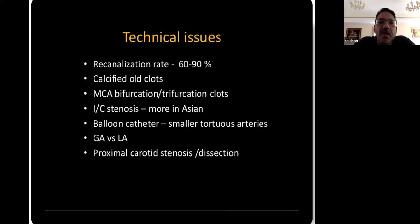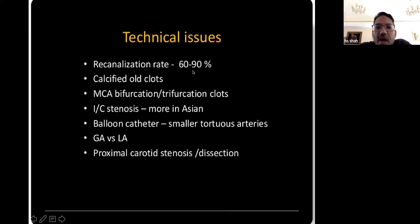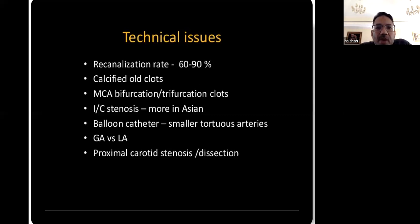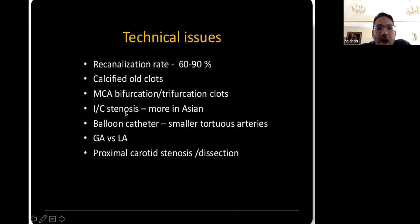Some technical issues: sometimes you can achieve high recanalization rates of 60 to 90%, but if there are calcified or old clots, they're difficult to get out. Calcified pieces from the heart are also difficult to treat. Bifurcation clots going into different vessels are difficult to treat. Some patients have intracranial stenosis — Pakistani and Indian patients among other Asians have higher rates of intracranial stenosis, smaller brain vessels, and smaller cardiac vessels, with higher rates correlating directly with smoking. Sometimes balloons can be used, but tortuous vessels make it difficult. You also have to decide between general and local anesthesia for certain patients.